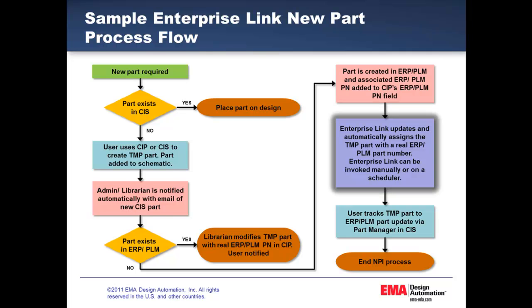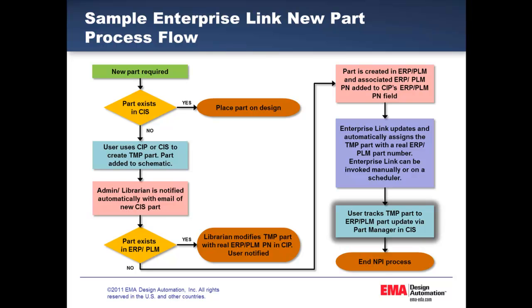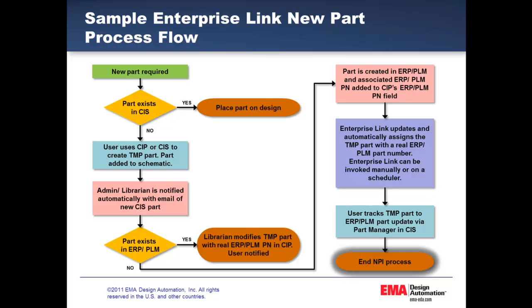EnterpriseLink updates and automatically assigns the temporary part with a real corporate part number. EnterpriseLink can be invoked either manually or on a scheduler. The user then tracks the temporary part to the corporate part updated via the part manager in CIS. This concludes the new part introduction process.